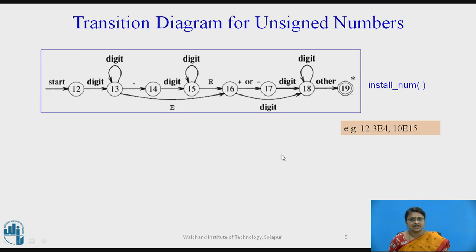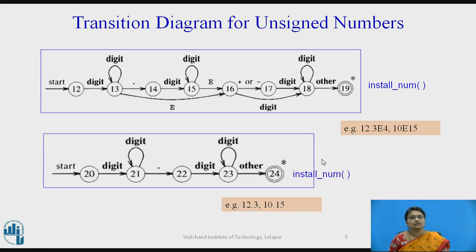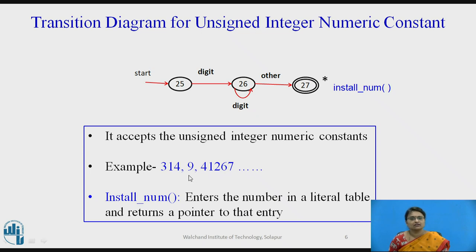This transition diagram is for unsigned numbers — specifically fractional and exponential values. For example, lexemes like 12.3E4 are accepted by this diagram, and it calls the installNum function which installs the number in the literal table and returns a pointer to it. The next transition diagram handles simple float fractional values like 12.3 or 10.15, generating a token for them. For simple numeric constants like 314 or a single digit, the digits are read one by one and installNum makes the entry in the literal table and returns a token.